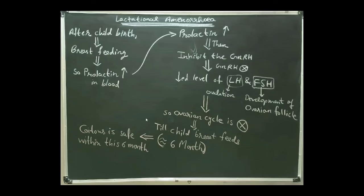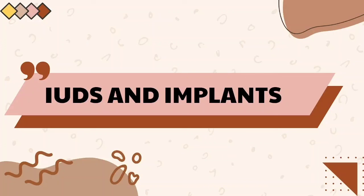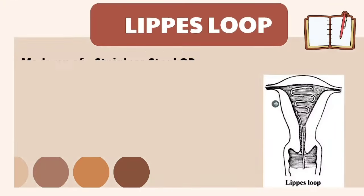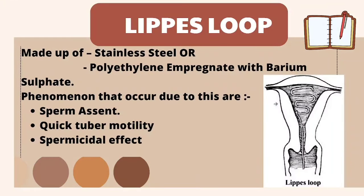Next is IUDs — intrauterine devices. As the name suggests, these are devices inserted within the uterus, made of metal or non-toxic plastic. There are two types: Lippes loop and Copper T. The Lippes loop is an inert type of IUD that does not release any chemical substances, and is made of stainless steel or polyethylene impregnated with barium sulfate.